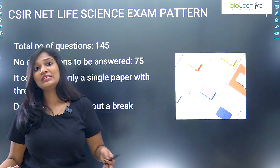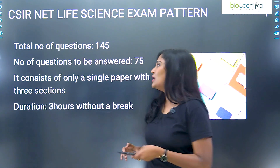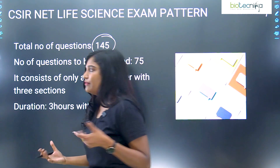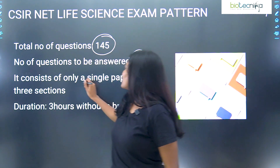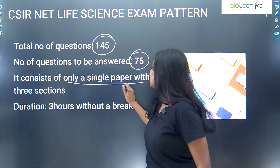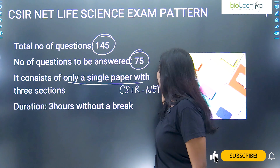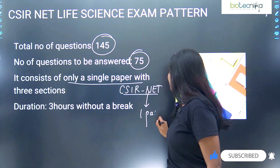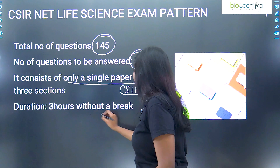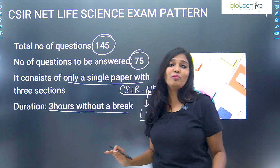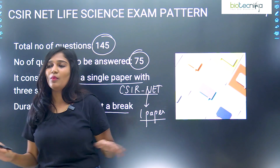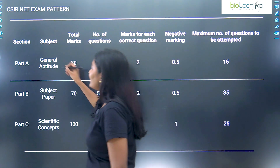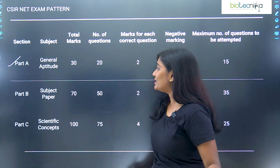Next is the exam pattern for CSIR NET life sciences, or CSIR NET in general. There are going to be 145 questions, out of which you will deal with only 75 questions. Very important: it's going to have only one paper. CSIR NET has only a single paper, and the duration is three hours with no break at all — you must complete this examination within three hours. The exam comprises three parts: Part A, Part B, and Part C.